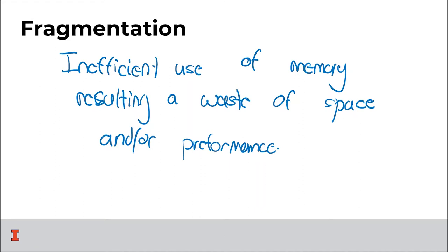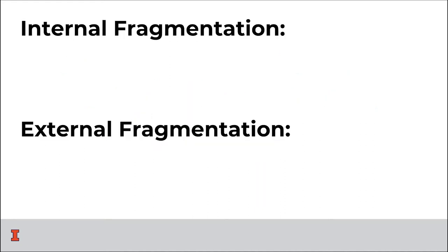Generally when we study fragmentation, we're going to study it from the view of the operating system. This is a different view than you normally take, because normally you think of yourself as a programmer thinking about the view of a process from the programmer's perspective. But we're going to take on the view from the operating system. From that view, internal and external fragmentation are almost backwards from what we might expect.